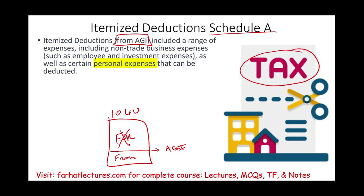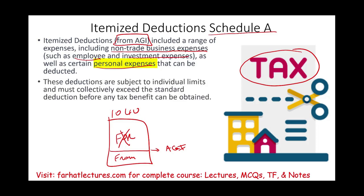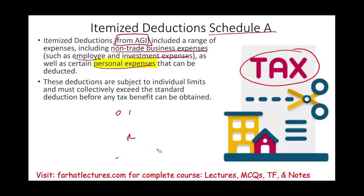Itemized deductions include non-trade business expenses. They're usually personal in nature. They could include some expenses you incur as an employee or as investment expenses. These deductions are only useful if they are greater than your standard deduction.